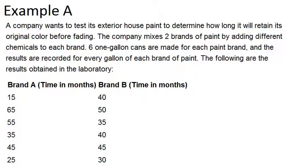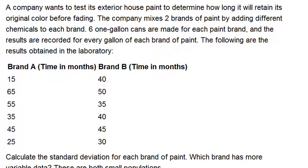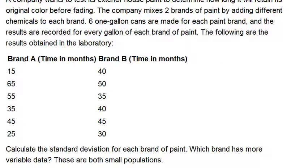Example A says a company wants to test its exterior house paint to determine how long it will retain its original color before fading. The company mixes two brands of paint by adding different chemicals to each brand. Six one-gallon cans are made for each paint brand, and the results are recorded for every gallon of each brand of paint. The following are the results obtained in the laboratory. We can see a table with results for Brand A and Brand B.